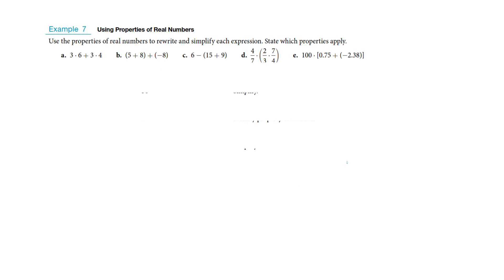I'm going to just talk through what the advantage of these properties would be. Looking at example A, they're showing the distributive property in reverse — we could take out a greatest common factor. I took out a GCF of 3 and created 3 times (6 plus 4). I don't know that this was actually any faster, but they've basically done their distributive property in reverse by pulling out a GCF.